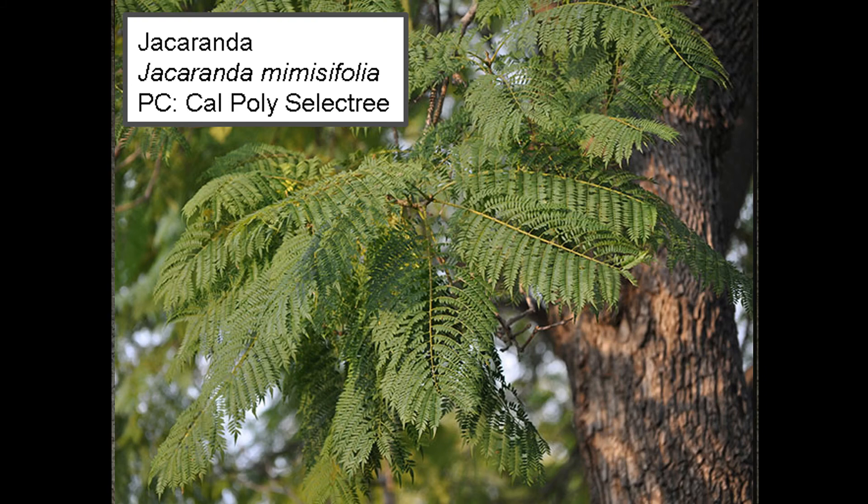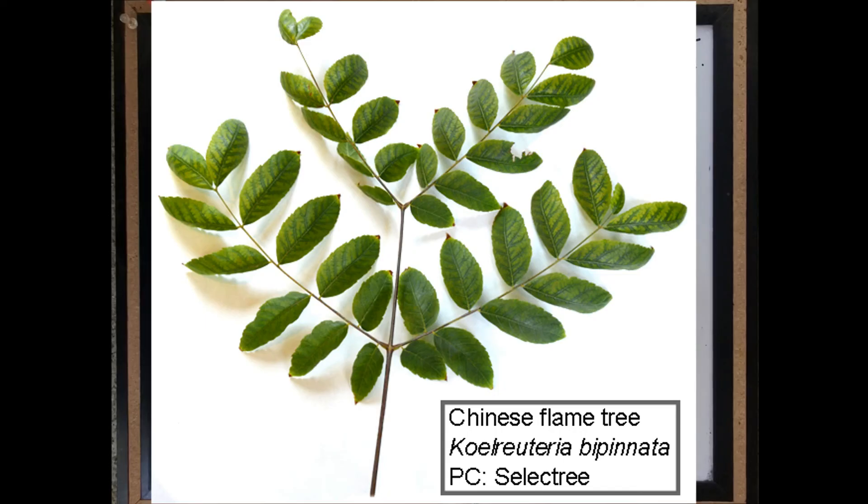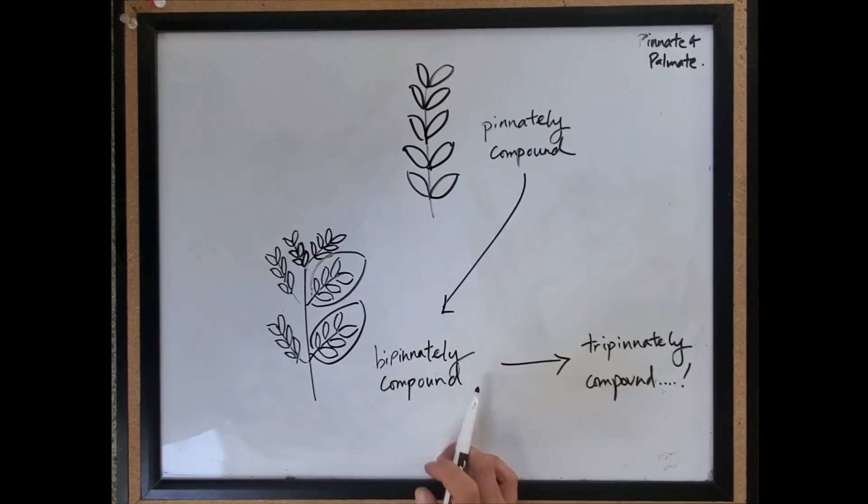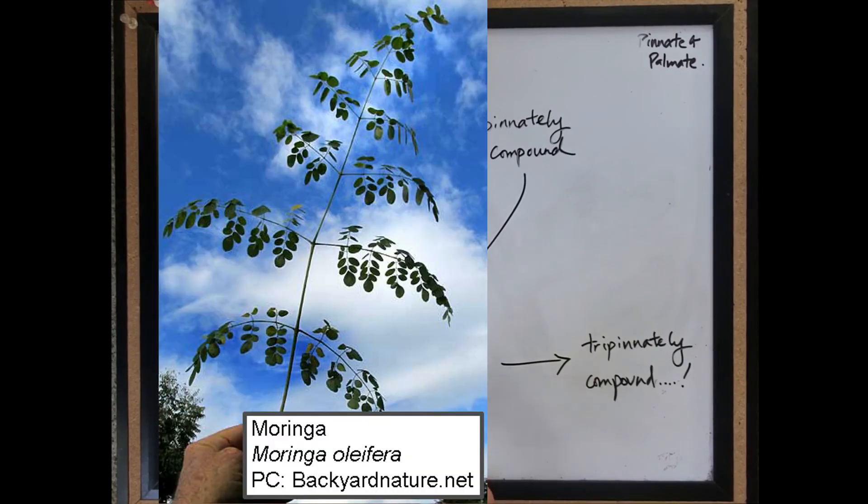An example of this would be a Jacaranda. There's also one of the Chinese rain trees, which has in its name Koelreuteria bipinnata. You can also tell from names sometimes. So that also has a bipinnately compound leaf.